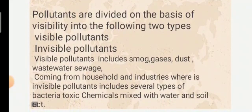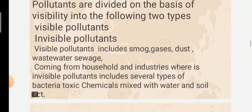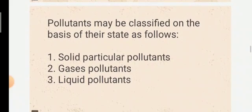Pollutants are also divided on the basis of visibility into two types: visible and invisible. Visible pollutants include smoke, gases, dust, waste water, sewage, etc., coming from households and industries. Various invisible pollutants include several types of bacteria, toxic chemicals mixed with water and soil, etc. Pollutants may also be classified on the basis of their state as solid, gas, and liquid pollutants.